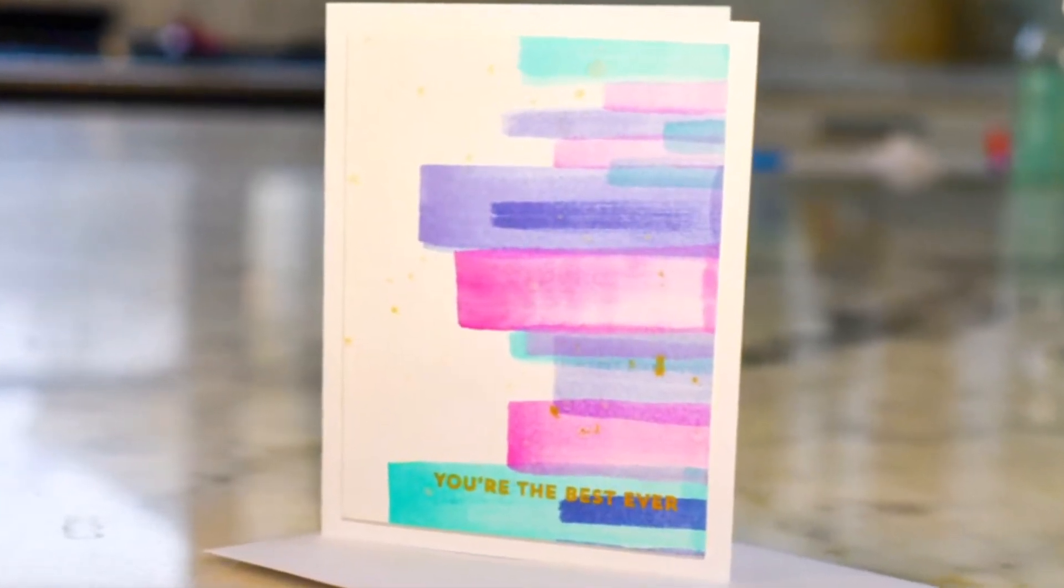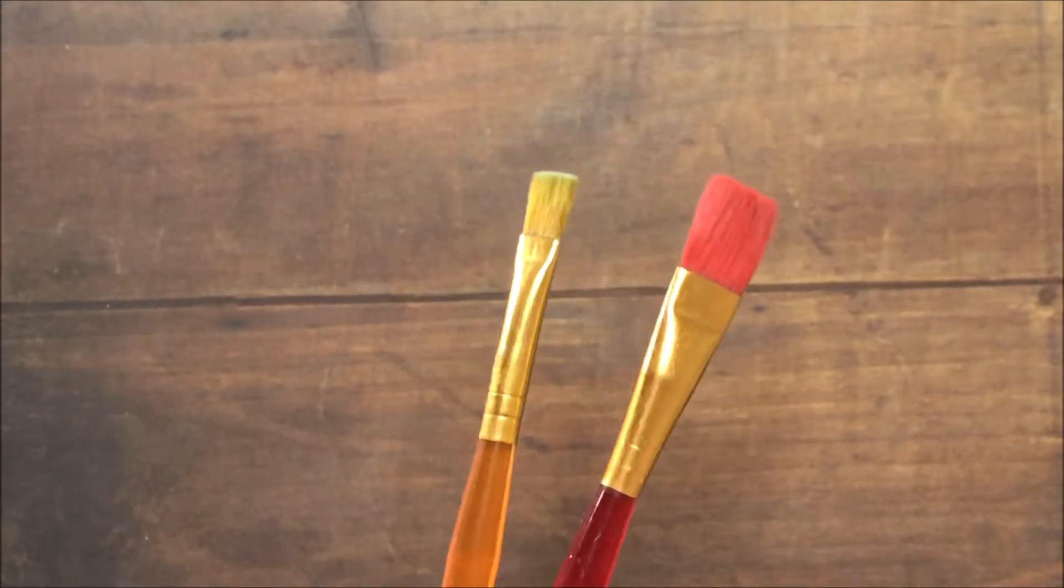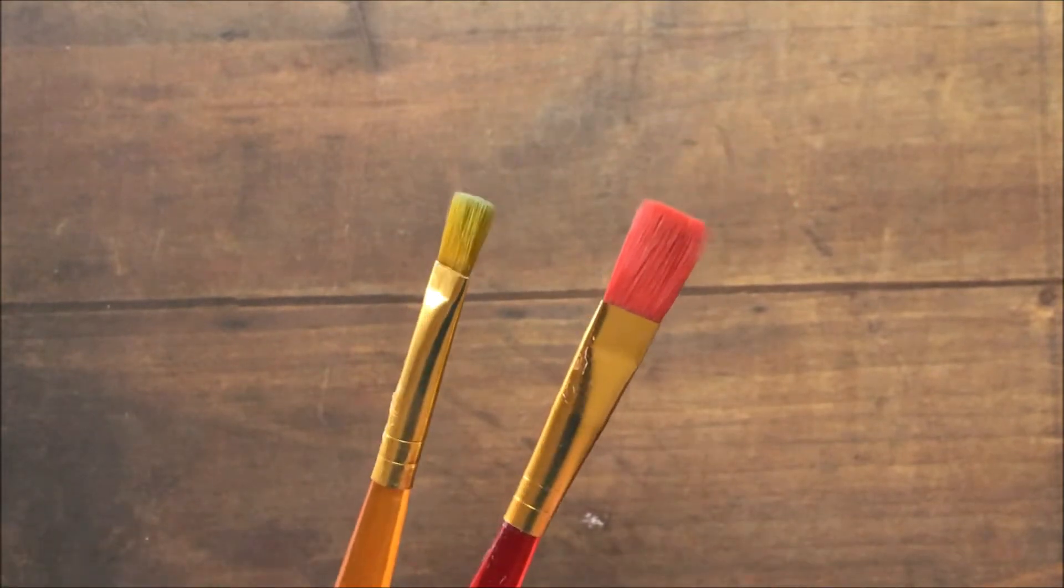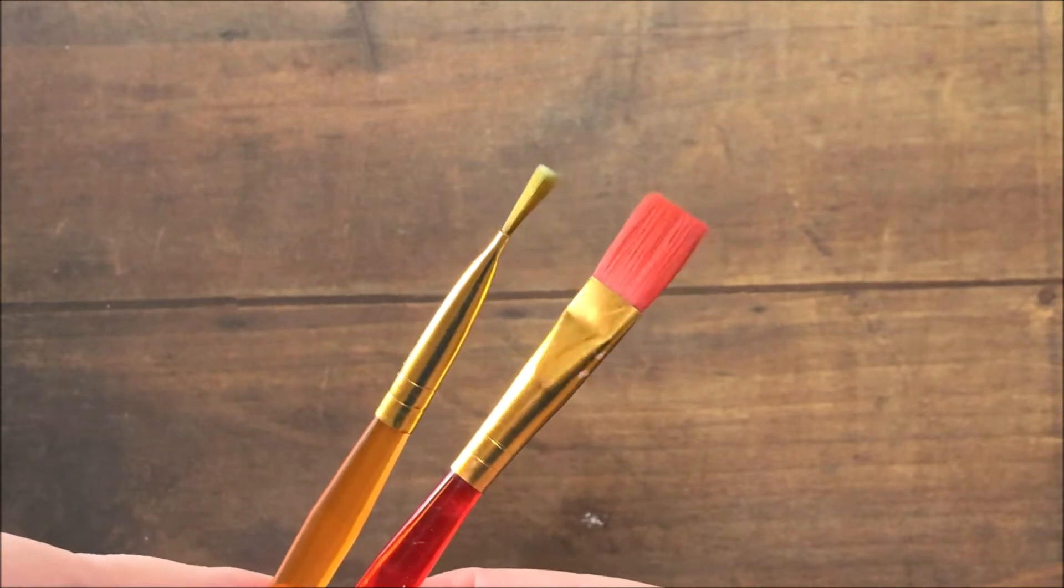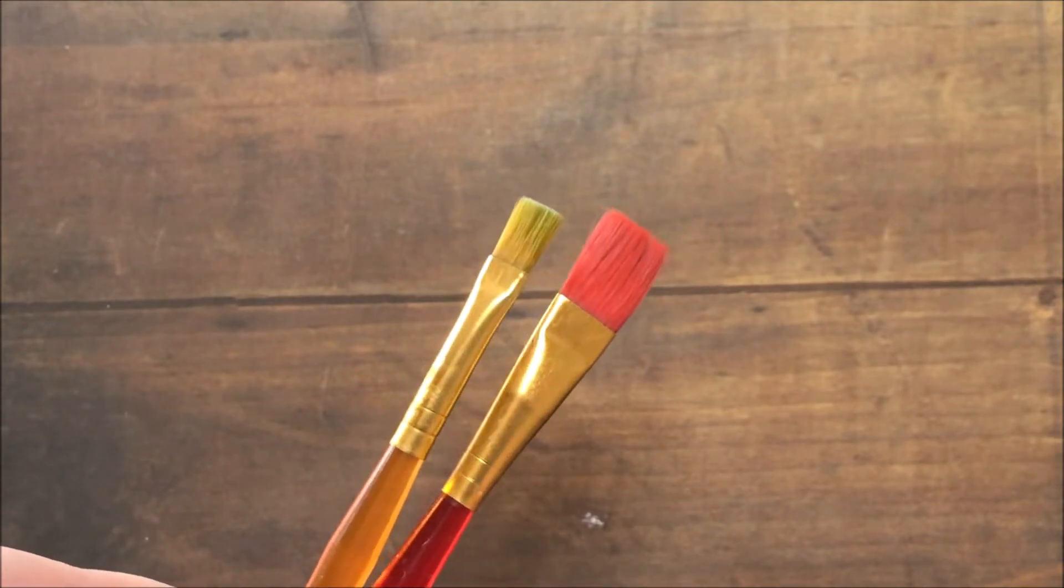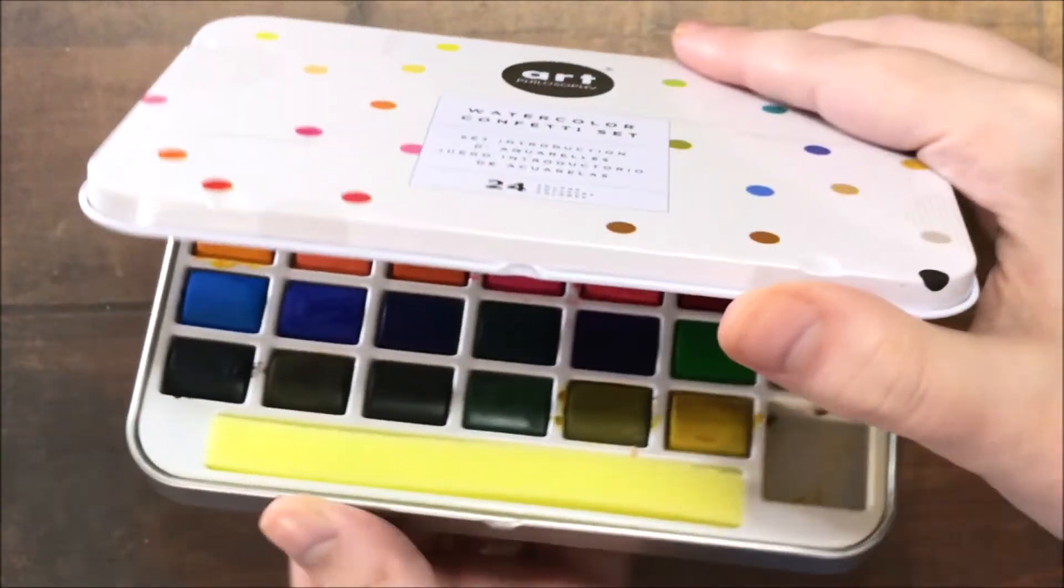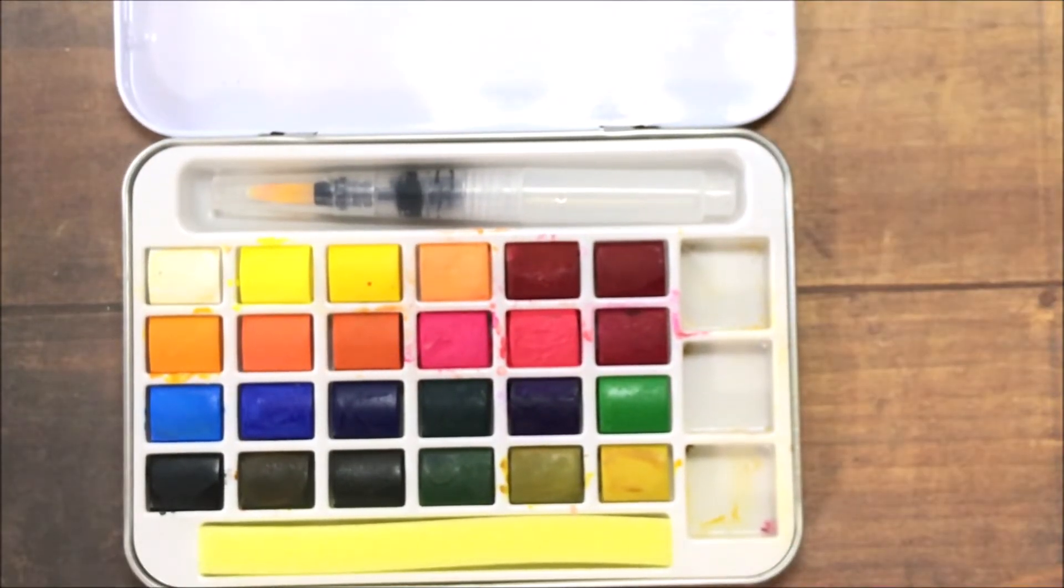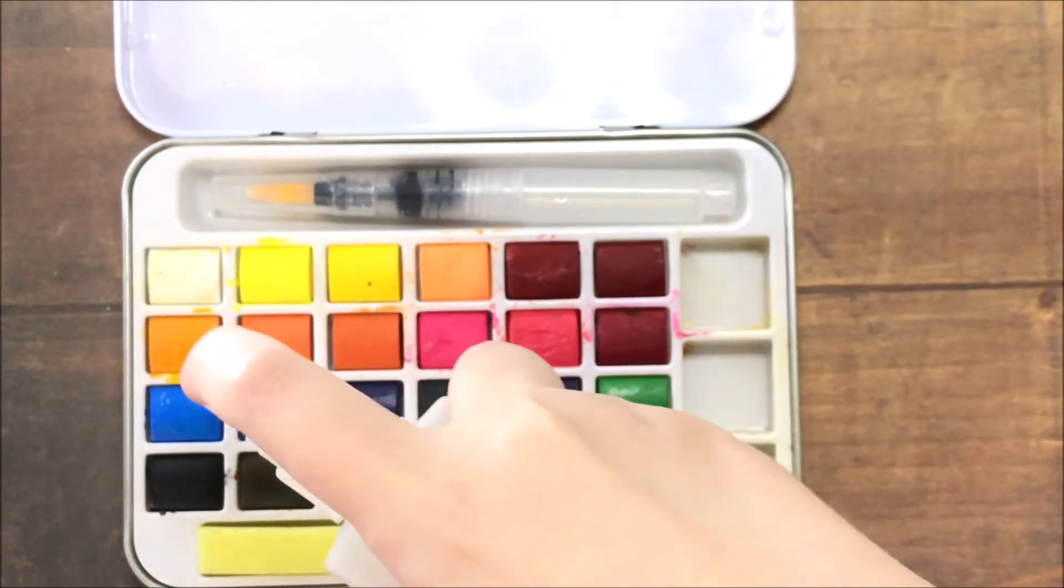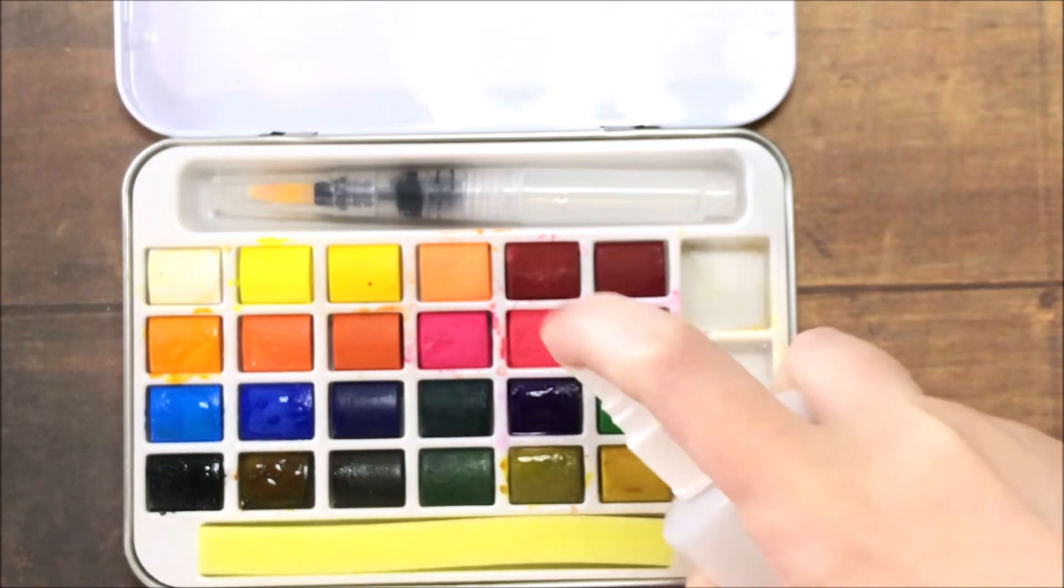And so I noticed on Catherine's card that she used two different brushes, that one was more broad and one was more narrow. And so I'm going to be doing the same thing to get the different widths of brush strokes. And the watercolors that I'm using today are the Prima watercolors. And I just recently got these, and I'm really enjoying them. They have nice pigmentation and very pretty colors in this particular palette. So I'm going to be using my water spritzer and just add a little bit of water to the colors that I'm going to be using.